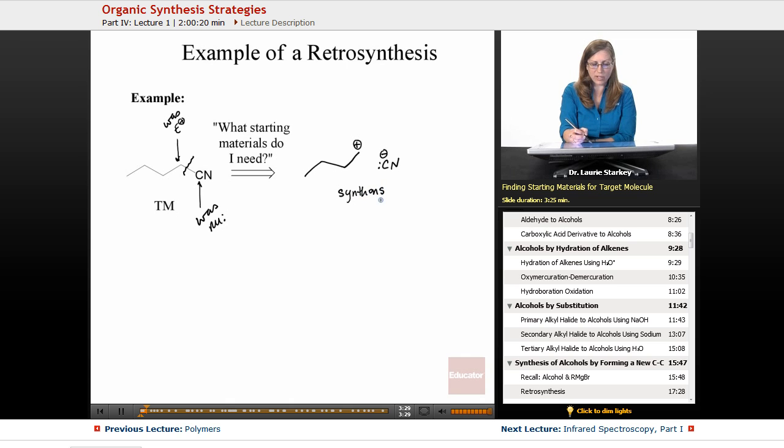Now, this first step is one possible step that we're doing here is to create what's known as synthons. These are imaginary structures that have the perfect reactivity. In other words, if I had this carbocation and this cyanide nucleophile, clearly they would come together and form the bond to make our target molecule.